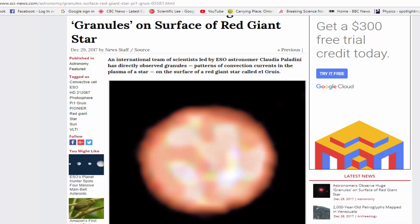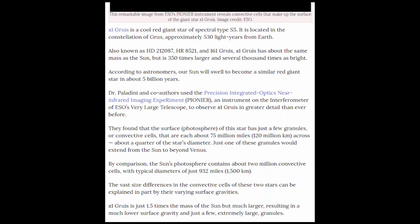Let's start reading. An international team of scientists led by ESO astronomer Claudio Palandini has directly observed granules, patterns of convection currents in the plasma of a star, on the surface of a red giant called Gruis. I'm going to go through what it says here. Gruis is a cool red giant star approximately 530 light years from Earth, 350 times larger than our sun and several thousand times as bright.